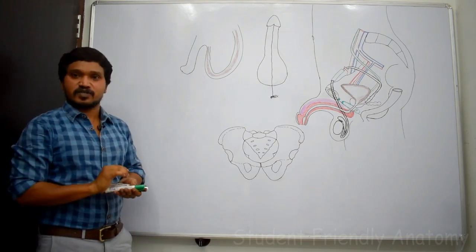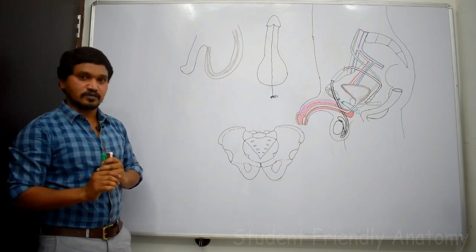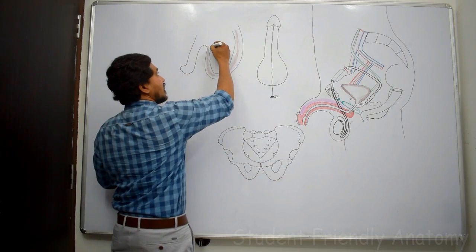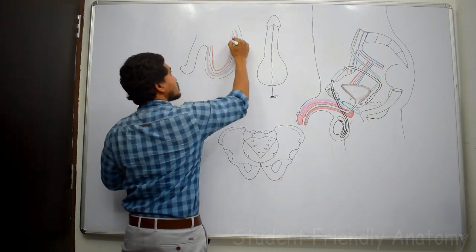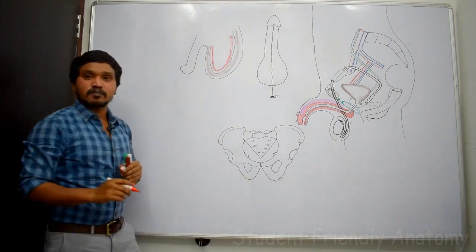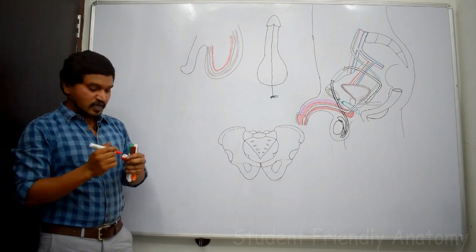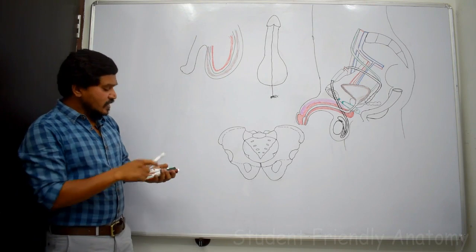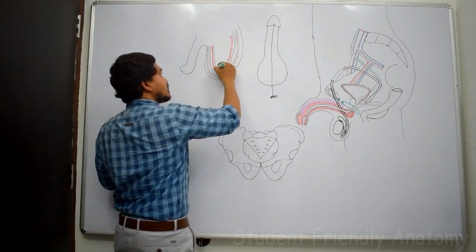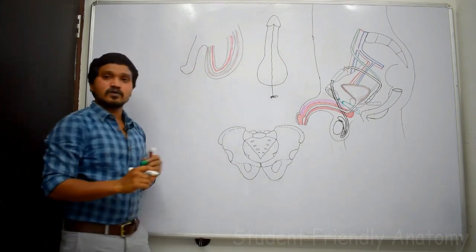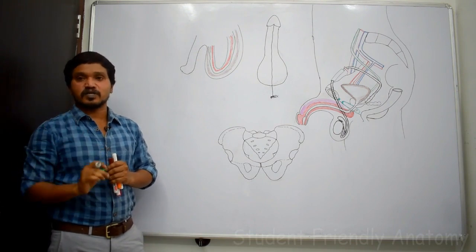Next is cremasteric muscle and cremasteric fascia, which are derived from the internal oblique abdominis and transversus abdominis muscles. The innermost layer is the internal spermatic fascia, which is derived from the transversalis fascia.